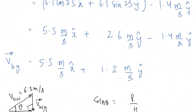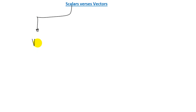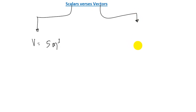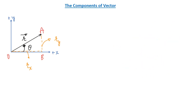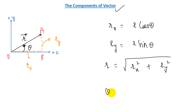Now back to the summary. The first topic is scalars and vectors. A scalar is a number with appropriate units — for example, volume of 5 cubic meters. A vector is a physical quantity that has both magnitude and direction, such as displacement or velocity. For the component of a vector: the x component is r cosine theta, the y component is r sine theta, the magnitude is the square root of rx squared plus ry squared, and the angle theta is tangent inverse of ry over rx.